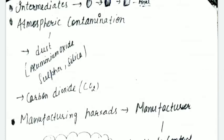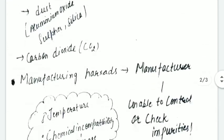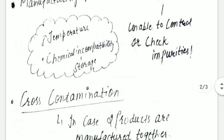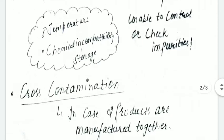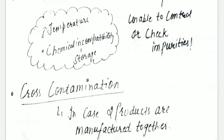After this, manufacturing hazards. Sometimes you can't control your impurities or check them properly because of temperature issues and chemical instability. I have added temperature and chemical instability in the notes; I will tell you more later.